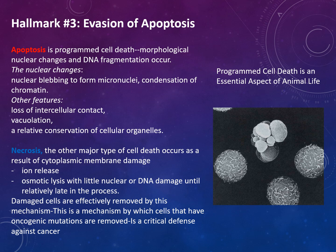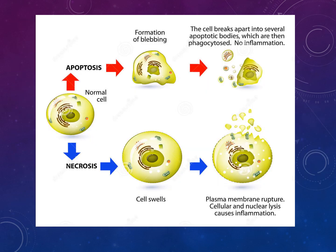In comparison, necrosis is another type of cell death resulting from cytoplasmic membrane damage, such as ion release and osmotic lysis, with little nuclear DNA damage until relatively late in the process. In necrosis, the cell swells and the plasma membrane ruptures, causing nucleolysis and inflammation. In apoptosis, blebbing occurs and the cell breaks apart into apoptotic bodies which are phagocytosed, with no inflammation.